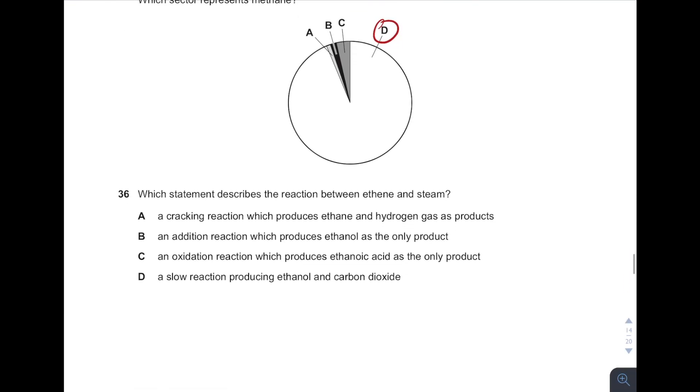Statement describes the reaction between ethene and steam. Remember, alkene with steam is what we call hydration. Alkene will always undergo addition reaction, and hydration is an example of addition reaction. Very obvious, the answer is B. Alkene undergoes hydration with steam to produce alcohol.